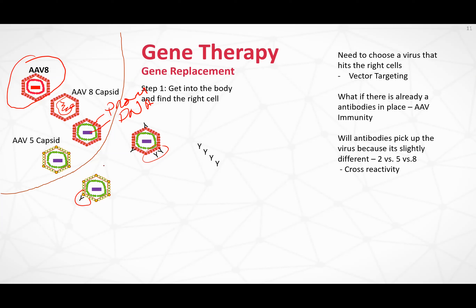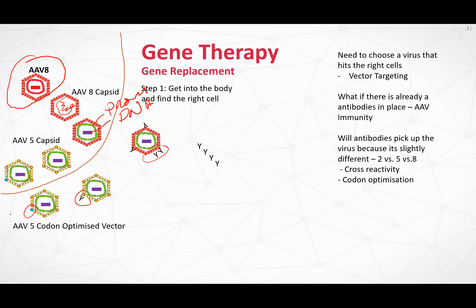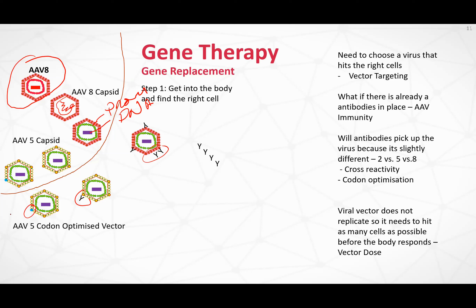Another option is codon optimization — where the antibody attaches to a location, we switch that location for something that doesn't look like that function. Then it can be given into the body. The next issue is that the viral vector doesn't replicate like a regular virus — it can only infect once. So you have to try and hit as many cells as possible before the body responds. That's referred to as the vector dose, which is an important concept when looking at the issues around gene therapy.